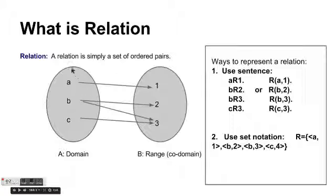And notice that the first element is called domain. So, A, B, C are in the domain. And the second elements are in the range. So 1, 2, 3 is in the range. Or you can call it co-domain.